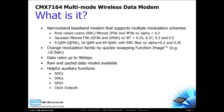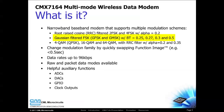The CMX7164 is a narrowband wireless data modem that supports multiple modulation schemes: root-raised cosine 2FSK and 4FSK, Gaussian filtered GFSK and GMSK, as well as 4QAM, 16QAM, and 64QAM are all supported by this single device.